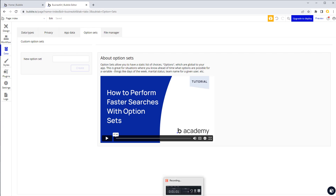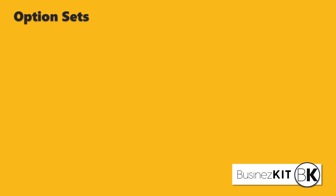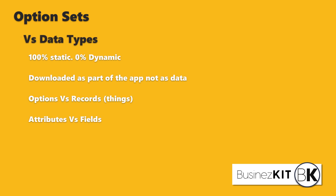The main differences between option sets and data types is that option sets are 100% static and 0% dynamic. The data held within option sets is static as part of your app - it cannot be dynamically changed within your app. They are downloaded as part of the app and are not considered to be data.